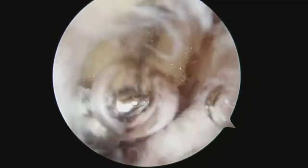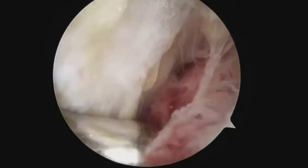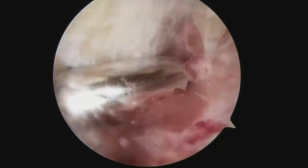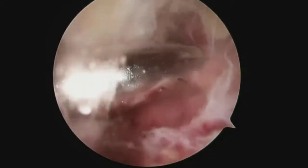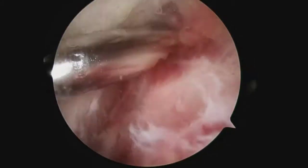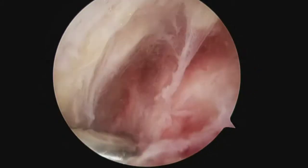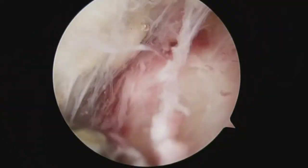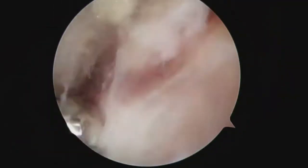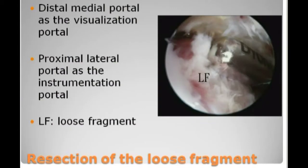The first step is resection of the inflamed bursa over the tibial tuberosity, if present. It is followed by resection of the loose body within the tendon.